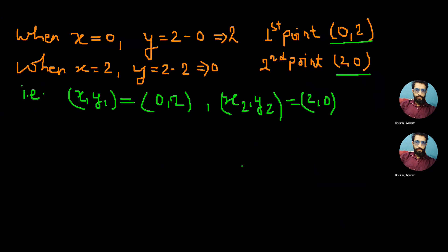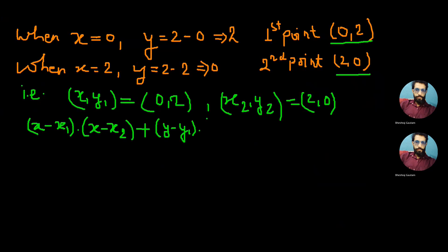As we know, the equation of the circle in diameter form — when two ends of the diameter are given — is written as (x − x₁)(x − x₂) + (y − y₁)(y − y₂) = 0.